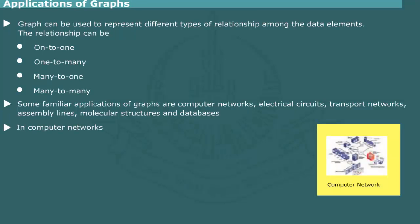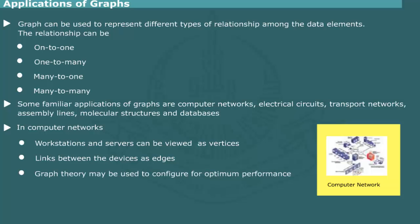In computer networks, workstations and servers can be viewed as vertices and links between the devices as edges. Thus, a graph may be used to configure a network for optimum performance. For example, using appropriate algorithms, we can determine the shortest or most economical routes for dispatching packets of information along different paths in a network.